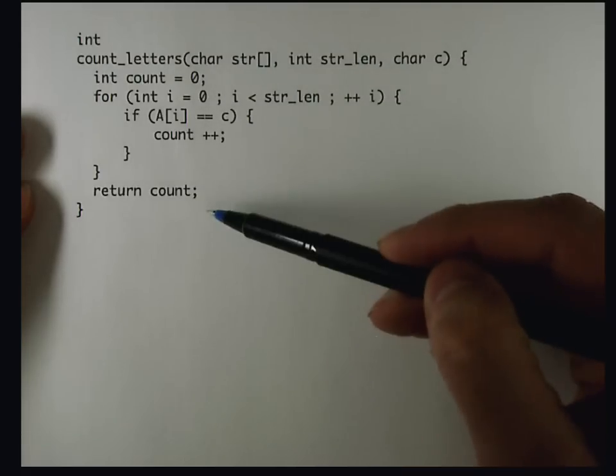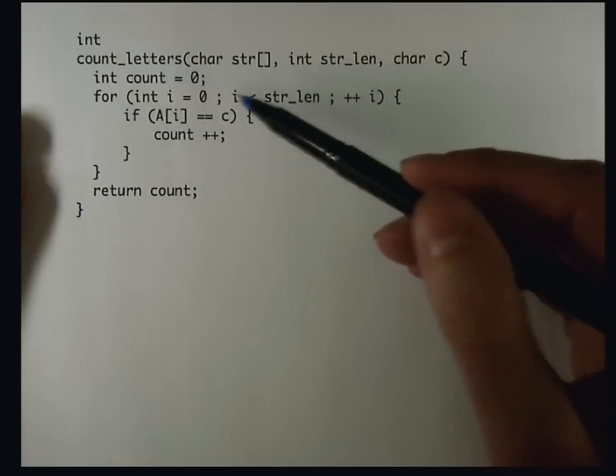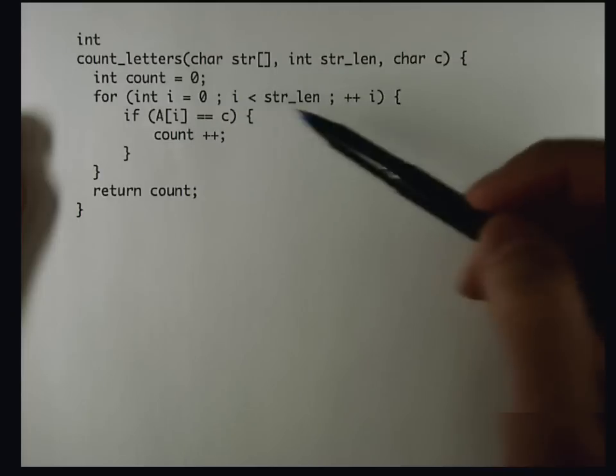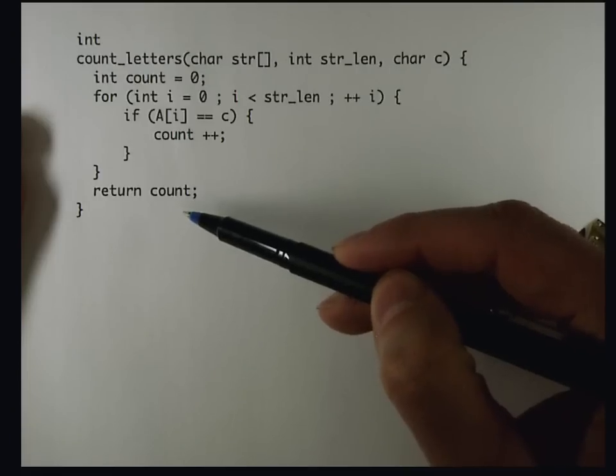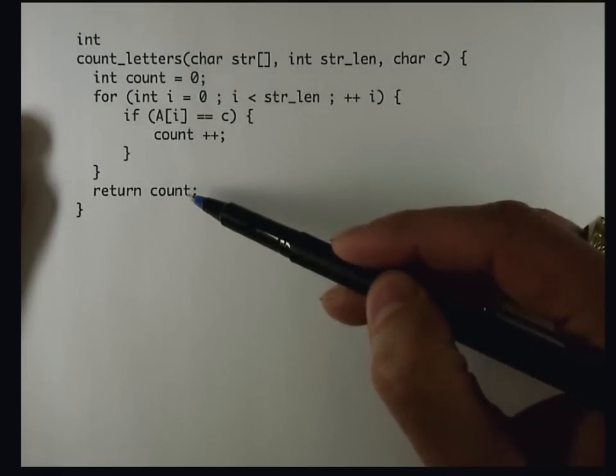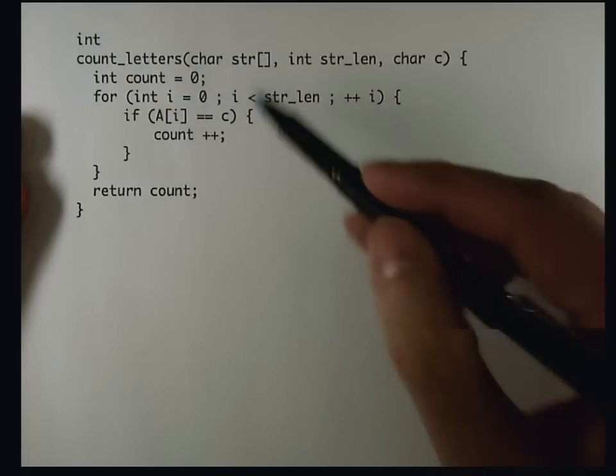The first thing I look at is it's a leaf function, which means it doesn't call any other functions. That means I'm probably not going to have to allocate a stack frame for it because it's not using a lot of variables.